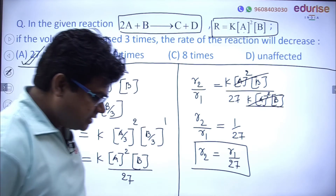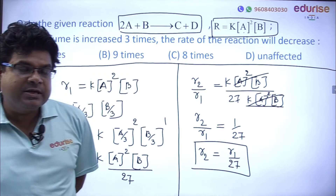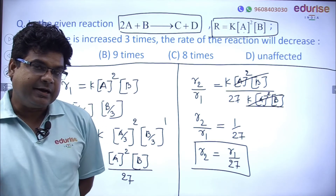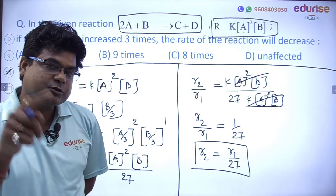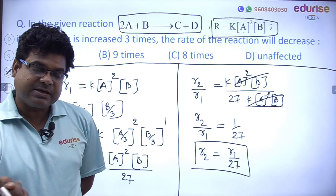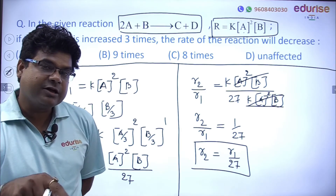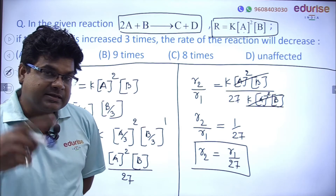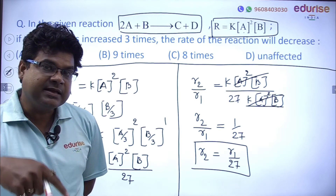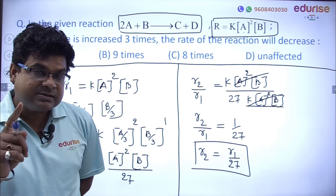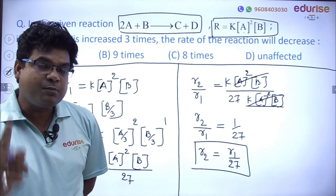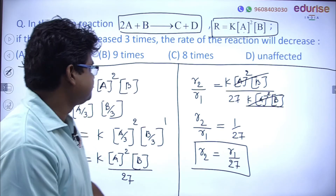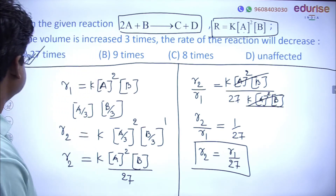What did we learn from this question? If volume increases, concentration decreases. Rate of reaction is directly proportional to concentration, so when concentration decreases, rate of reaction decreases; when concentration increases, rate of reaction increases. Rate of reaction is directly proportional to concentration. Let's move to the next question.